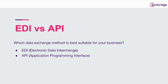API, or application programming interface, is a way software systems interact with external software systems. There is a client system that sends a request and a server system that sends a response. API is the way modern applications exchange information.